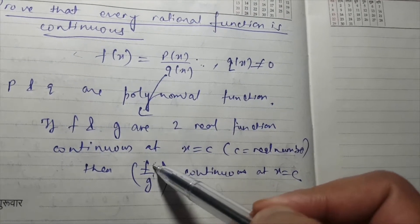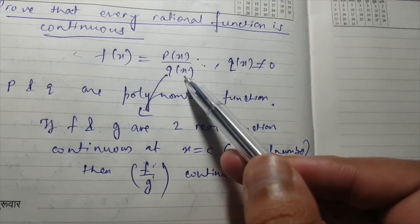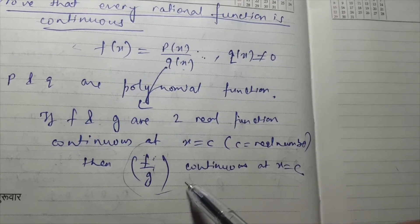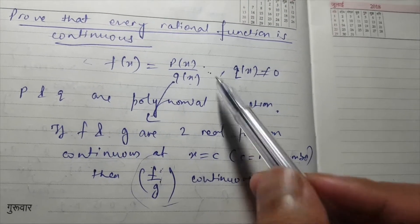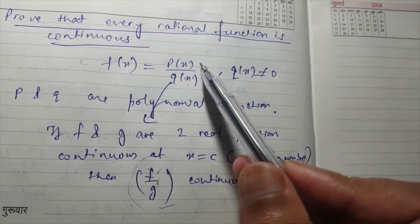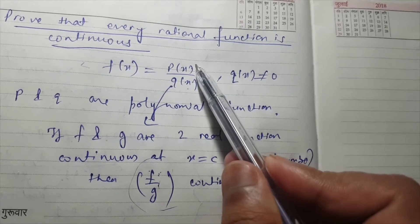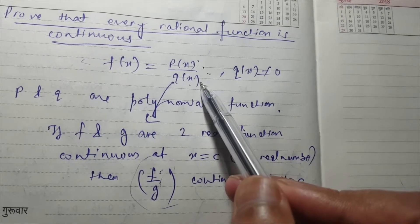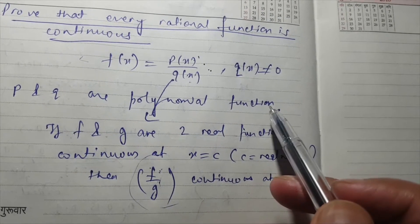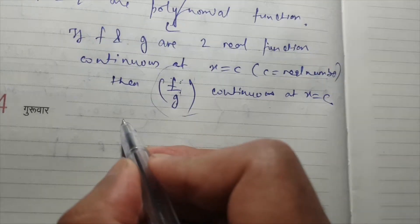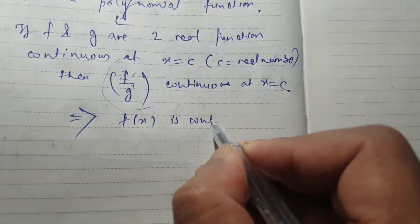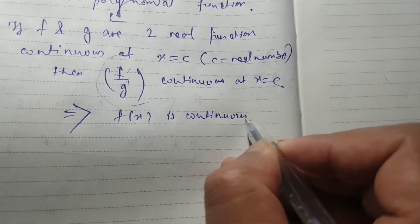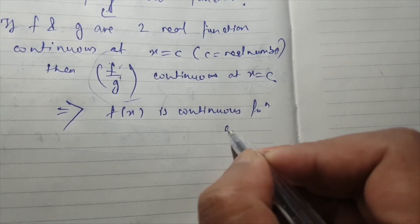So we have the same form here. Our first function f(x) is p(x) and g(x) is q(x). By the algebra of continuous functions, when you divide one continuous function by another continuous function, we get another continuous function. From here it clearly implies that f(x) is a continuous function at x equal to c.